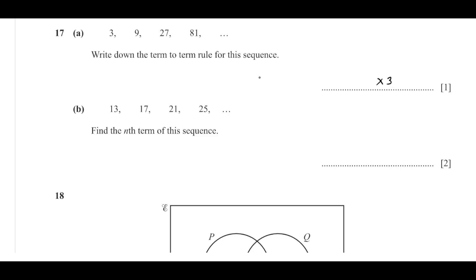Now part (b): 13, 17, 21, 25. I have to find the nth term of the sequence. If we see the difference here, 13 plus 4 is going to be 17, 17 plus 4 is 21, plus 4.